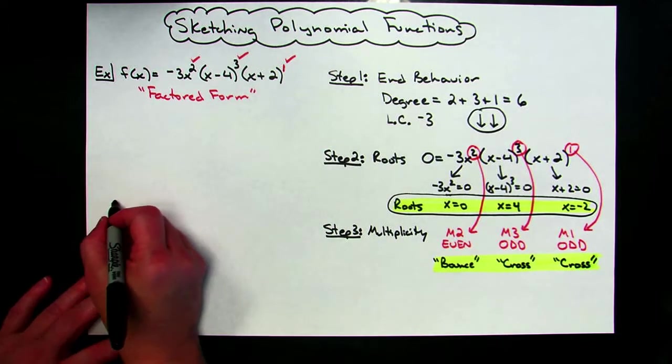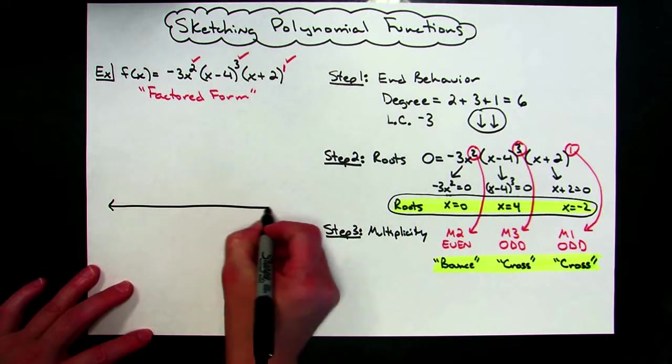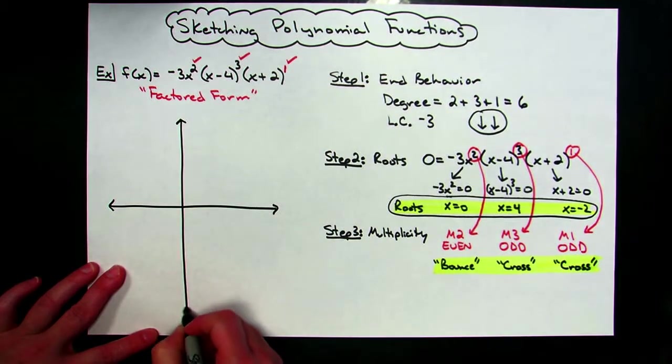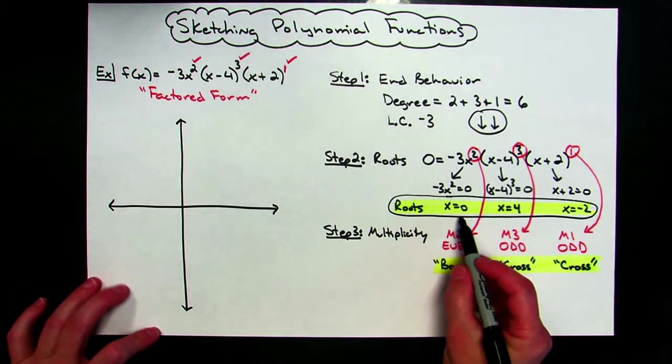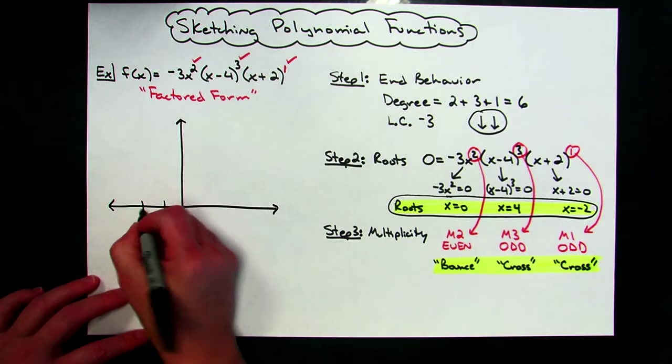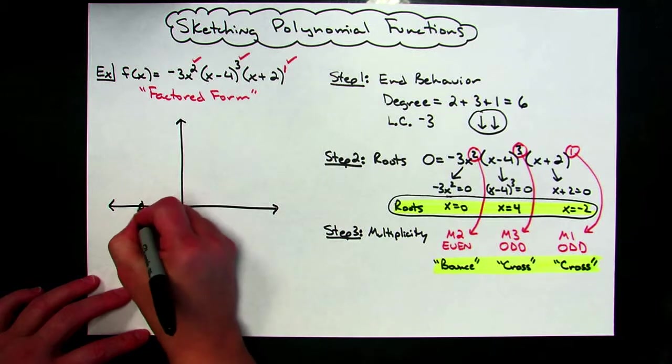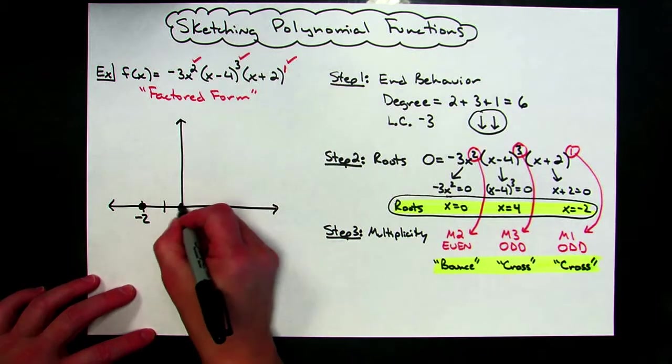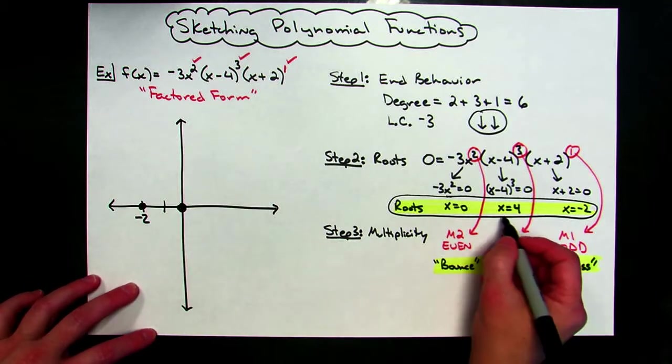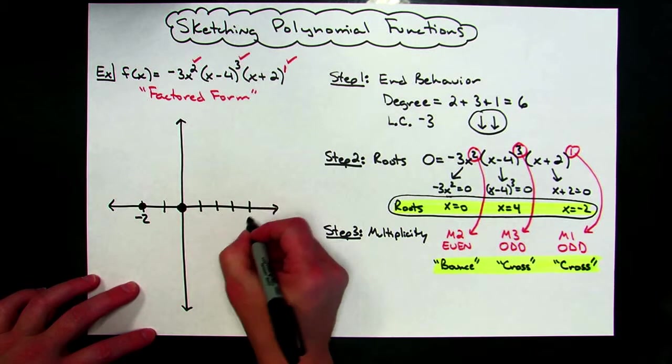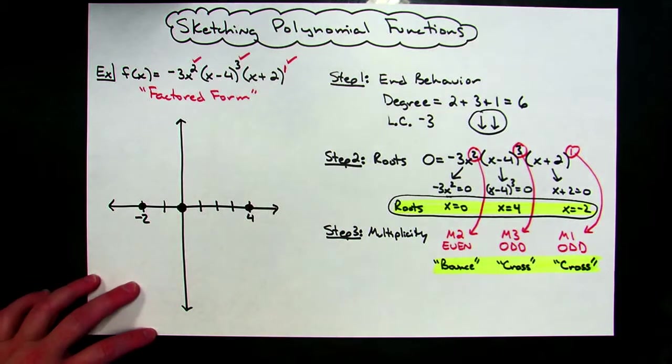All right, now I'm going to come over here, and I'm going to do a really rough sketch of what this looks like. All right, first thing I'm going to do, I know I have roots at zero, four, and negative two, so I'm going to put those on my graph. All right, there's negative two. I know I have a root, so I know I cross there. I have a root at x equals zero. I'm going to put that there. I know I have a root at x equals four, three, four, that's four, and there we go, I've got a root there.